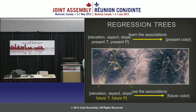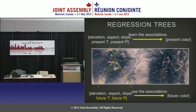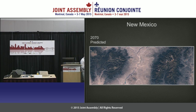Then for a climate change scenario for 2070, every point still has the same elevation, aspect, and slope, but we swap in the downscaled GCM output for future precipitation and temperature. We take our association model and apply it with these new predictive variables to get a future color — and that's what you're looking at in our rendering of the New Mexico site in 2070.